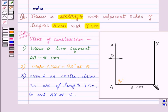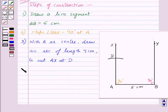So here we have drawn angle ABY equal to 90 degrees. So let us write our next point of construction that is make angle ABY equal to 90 degrees at point B.